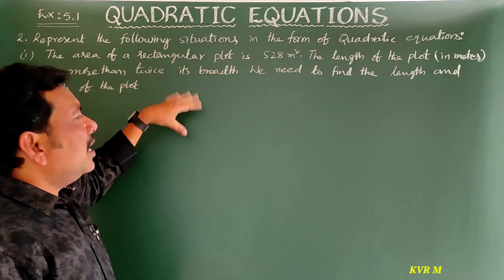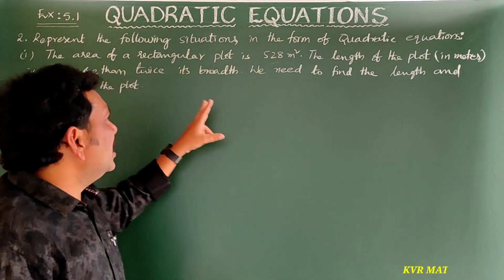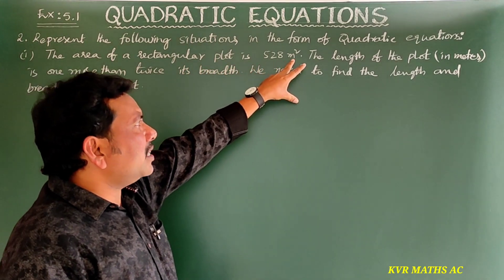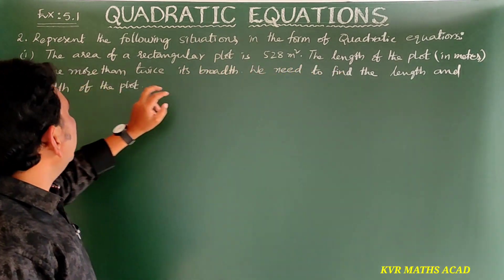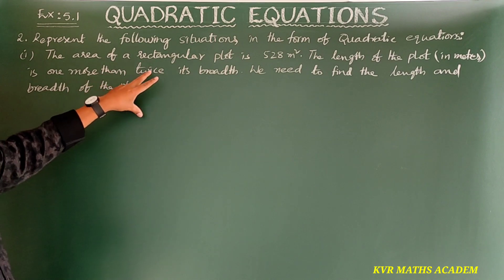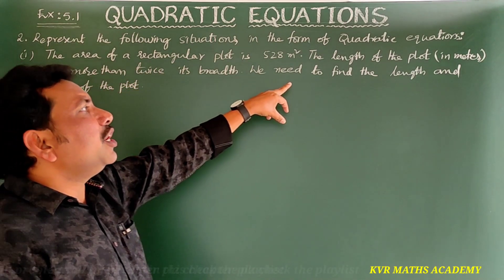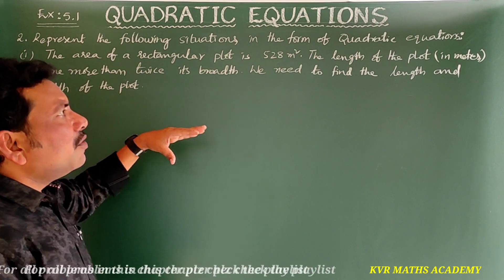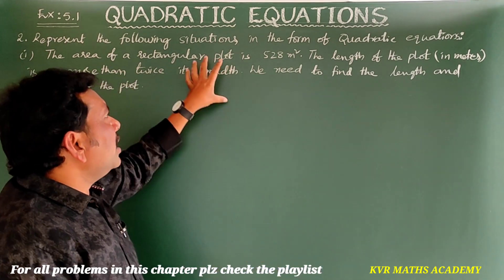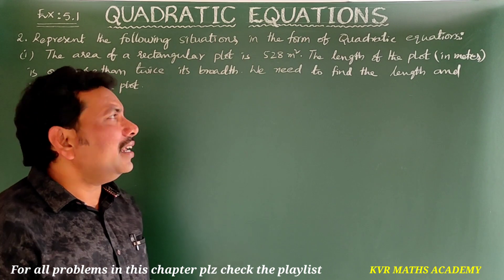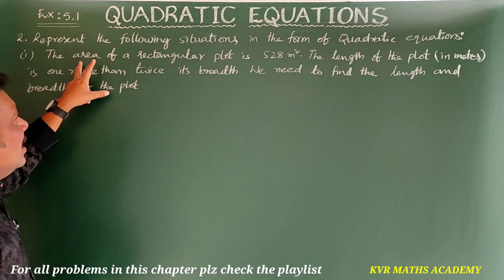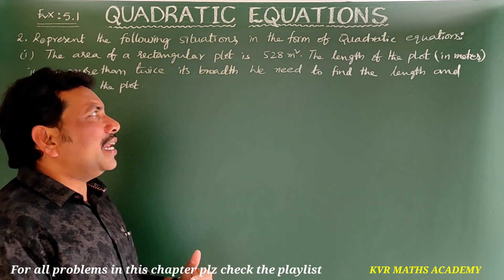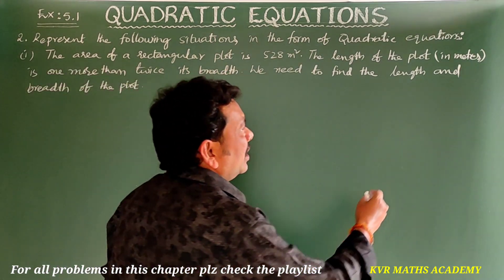Four situations are given, so let us discuss one by one. The first one: the area of a rectangular plot is 528 square meters. The length of the plot in meters is one more than twice its breadth. We need to find the length and breadth of the plot — we have to write the quadratic equation for the given problem.